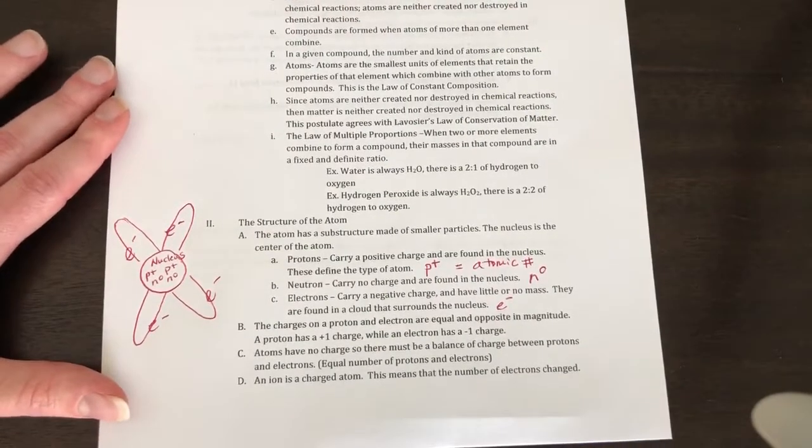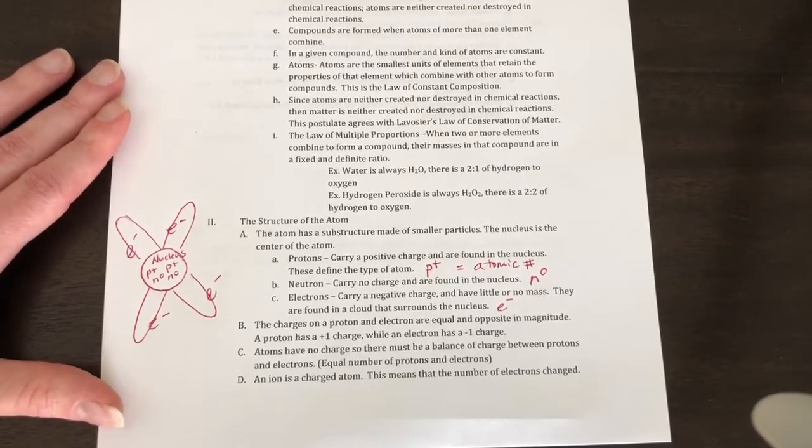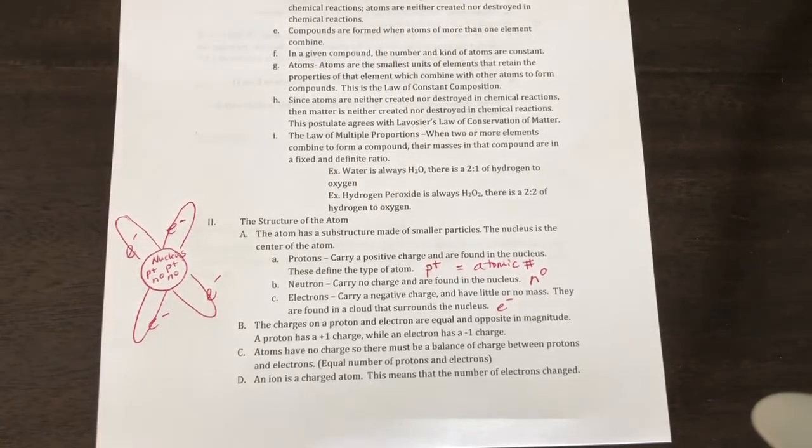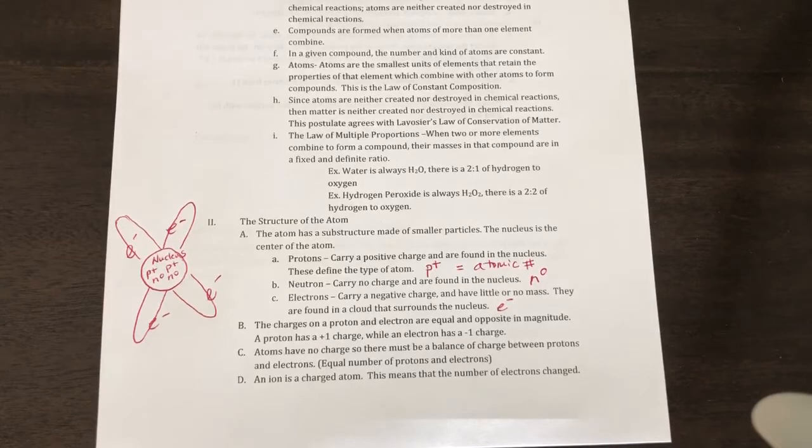Proton has a positive one charge, and electron has a negative one charge. The reason why the electrons stay away from the nucleus is because they're attracted to the positive charge of the nucleus. Remember, opposite charges attract one another.